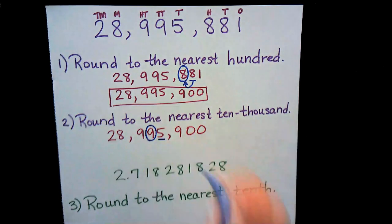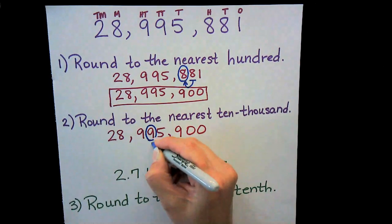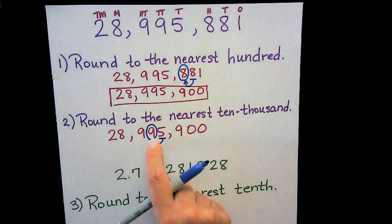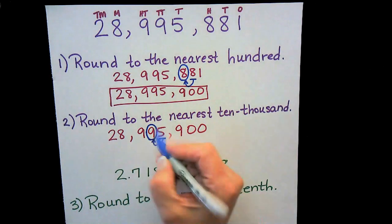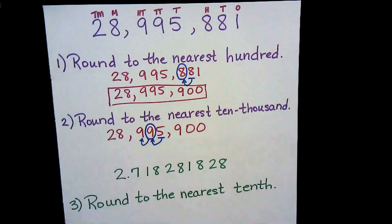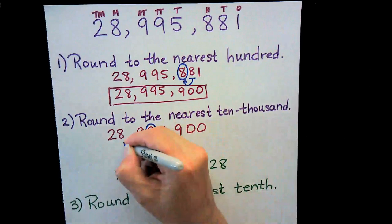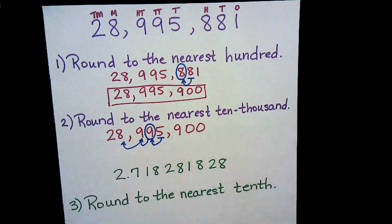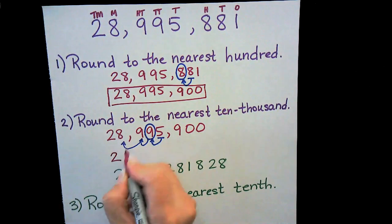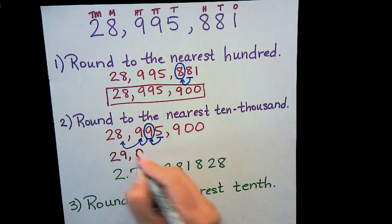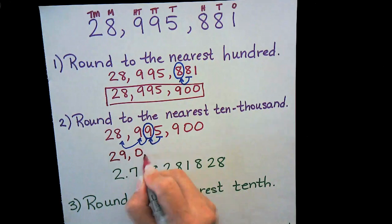We underline the digit just to the right. Notice it is five or higher, so it's going to bump up the circled number. The tricky part is when you bump up a nine, it becomes ten, which in turn bumps up the next digit. That's also a nine, so it bumps up again. The two stays the same, the eight gets bumped up to a nine.